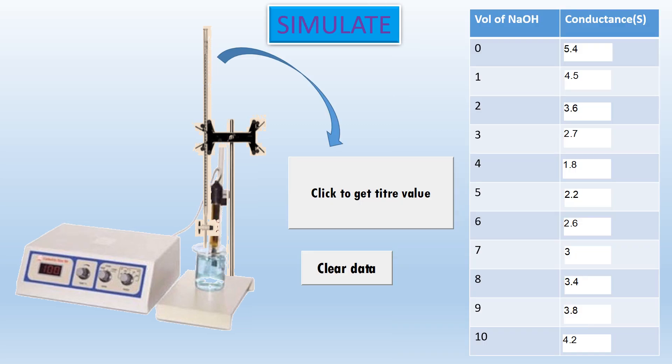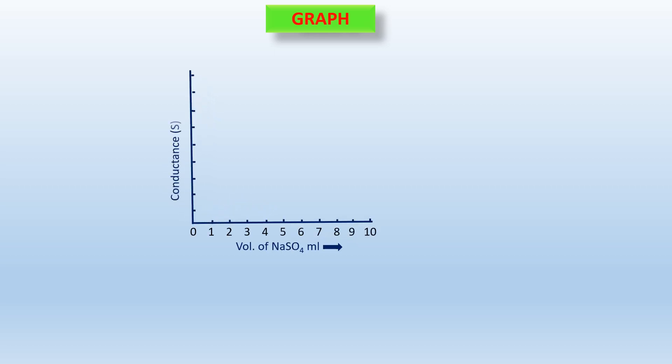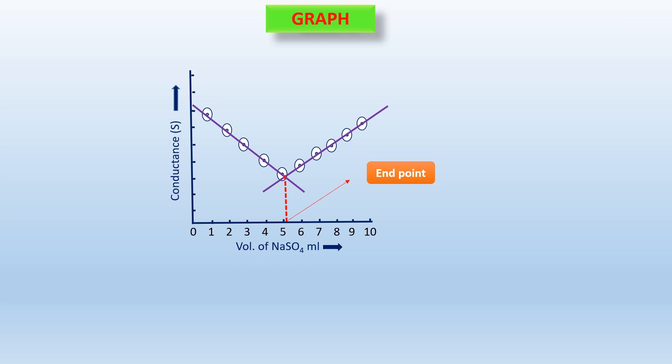Here we have a simulator where we have clicked in, simulated, and obtained the values. You can note down the values and plot the graph, or clear the data and take the values again. The graph is plotted with volume from 0 to 10 on the x-axis and conductance on the y-axis, showing a smooth straight line. We are able to get the end point, which is at approximately 5.1 ml.